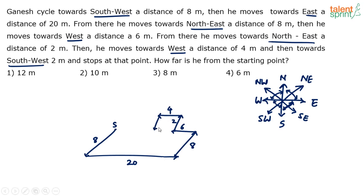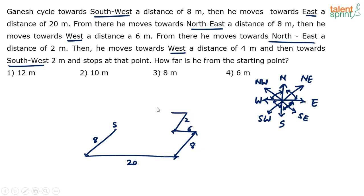He moves southwest a distance of two meters and stops at this point. You don't need to draw this neatly in the exam — I'm just redrawing to make it clearer. So he moved six meters west, then northeast two meters, then west four meters, then southwest two meters, and stops here. This was the starting point and this is the stopping point.